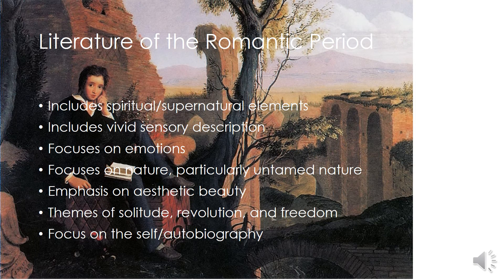After the time of Thomas Paine and the introduction of ideas such as life, liberty, revolution, and individuality, the literature and works of art started reflecting those ideals. The literature of the Romantic period includes spiritual and supernatural elements, vivid sensory description, a focus on emotions — not just logic and reason — a focus on nature, particularly untamed nature, not just symmetry, a focus on aesthetic beauty rather than necessity, and themes of solitude, revolution, and freedom. There is also a strong focus on the self and the individual.